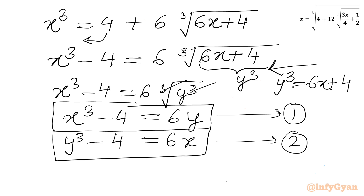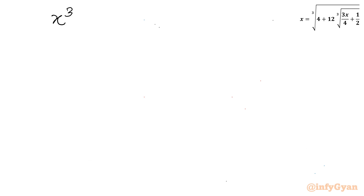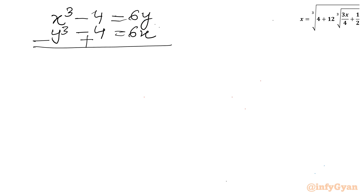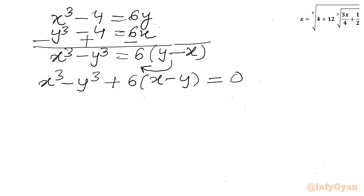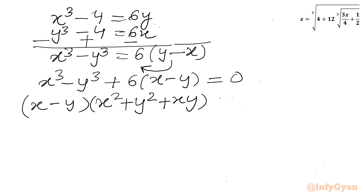Now I will subtract equation 2 from equation 1. We have x cubed minus 4 equals 6y, and y cubed minus 4 equals 6x. Subtracting gives x cubed minus y cubed equals 6 times (y minus x). Now I'll take the right-hand side term to the left: x cubed minus y cubed plus 6 times (x minus y) equals 0. Using the difference of cubes, I can write x minus y times (x squared plus y squared plus xy), plus 6 times (x minus y) equals 0.